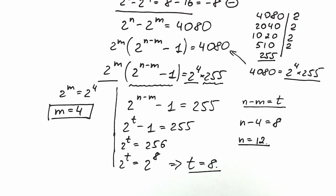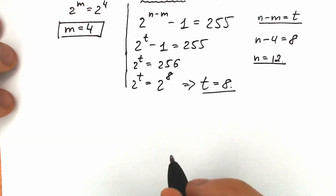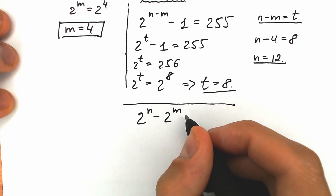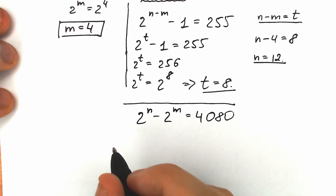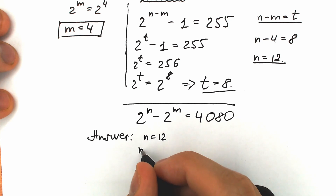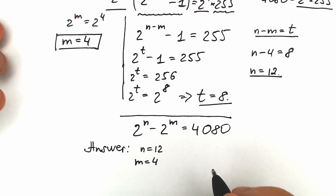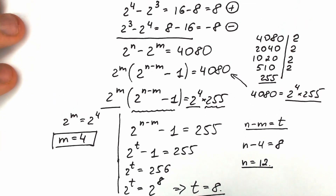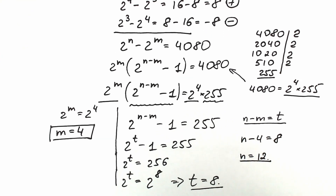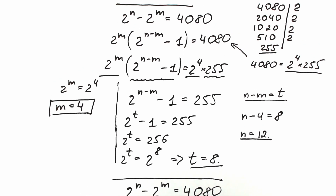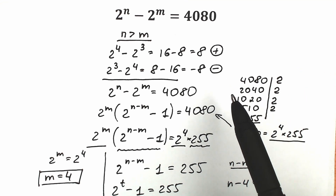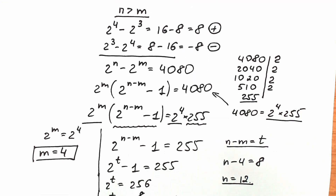So our final answer: 2 to the power n minus 2 to the power m equals 4080, with n equal to 12 and m equal to 4. A lot of students can easily solve this by inspection, but as you can see there are really interesting tricks here — we factor, we find our roots. The inspection method is great for checking a root, but it's not a good method for an exam when you need to write a proper mathematical solution.